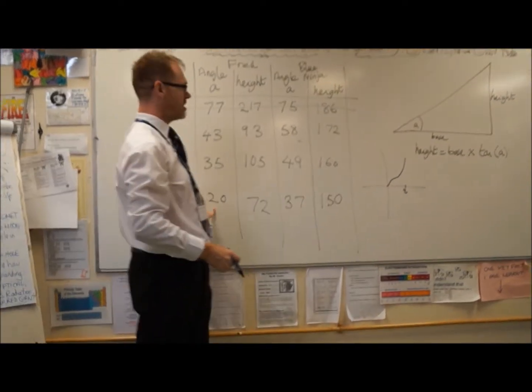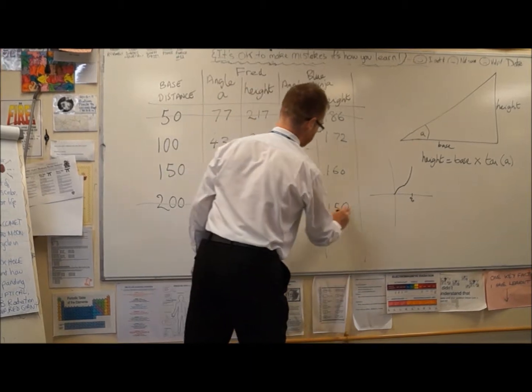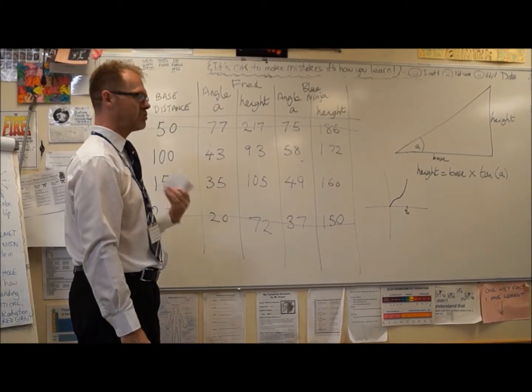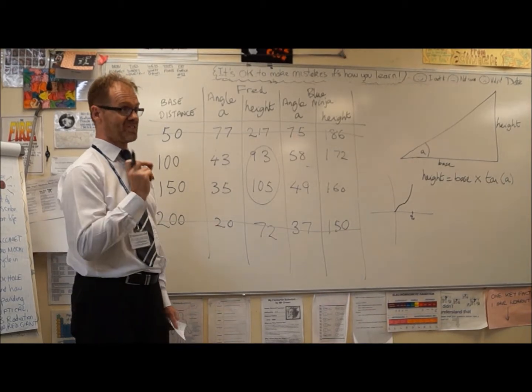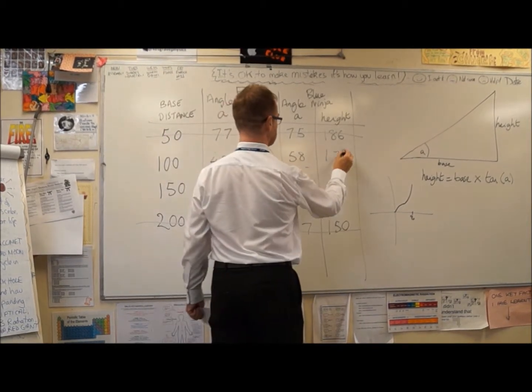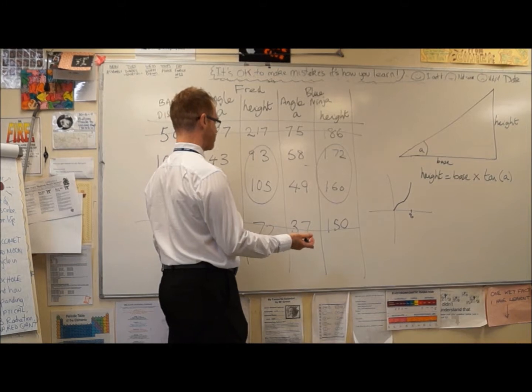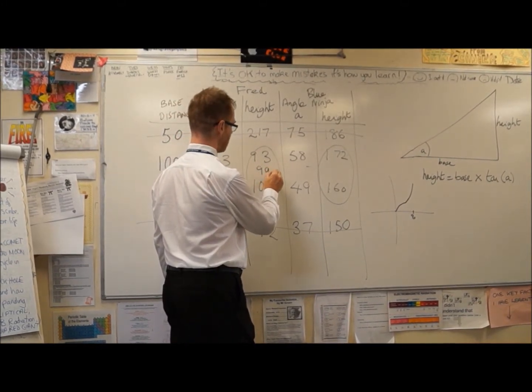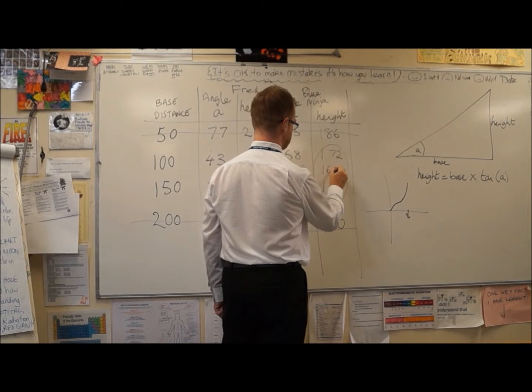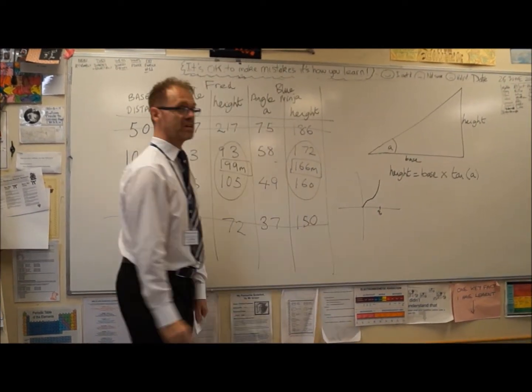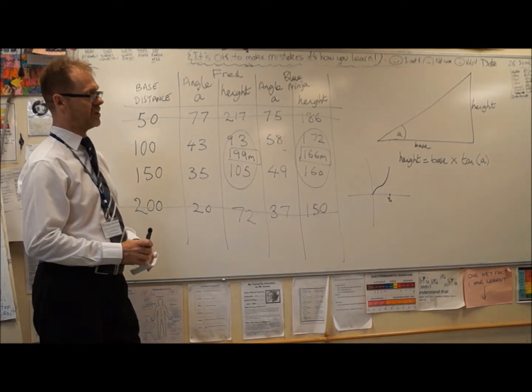200 metres, we've got tiny angles, so we're trying to fit the whole of the rocket launch inside 20 degrees. So, I'm going to put a line through that as well. I don't trust those measurements. And as soon as I do that, what do we see? We see a pair of measurements for Fred, 93 and 105. So, they're pretty close. And likewise, for Blue Ninja, 172 and 160. Again, very close. So, if I just do some averaging now, so that would be an average of 99 metres. These are estimates, after all. And for this one, would be 166 metres. So, we're going to reliably say that Blue Ninja went a lot higher, and I believe they were about 99 and 166 metres, respectively. Thank you.